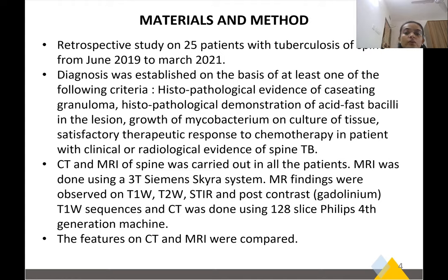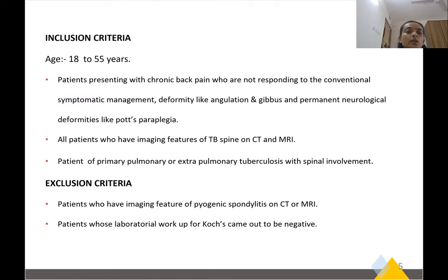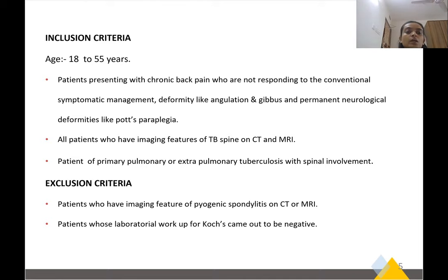CT and MRI spine was carried out in all patients and features were compared. Inclusion criteria: 18 to 55-year-old patients presenting with chronic back pain not responding to conventional symptomatic management, deformity like angulation or gibbus, permanent neurological deformities like Pott's paraplegia, patients with imaging features of TB spine on CT and MRI, and patients with primary pulmonary or extra-pulmonary tuberculosis with spinal involvement. Exclusion criteria: patients with imaging features of pyogenic spondylitis, or negative laboratory workup for Koch's.